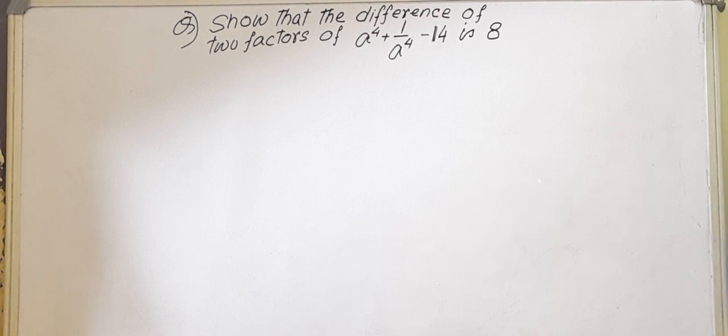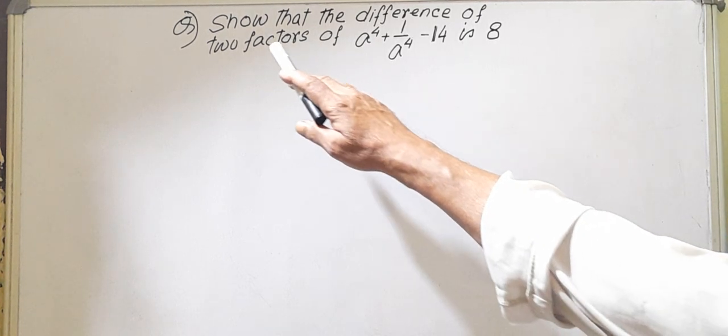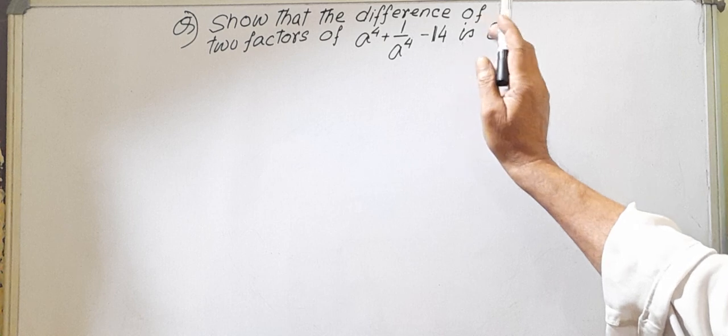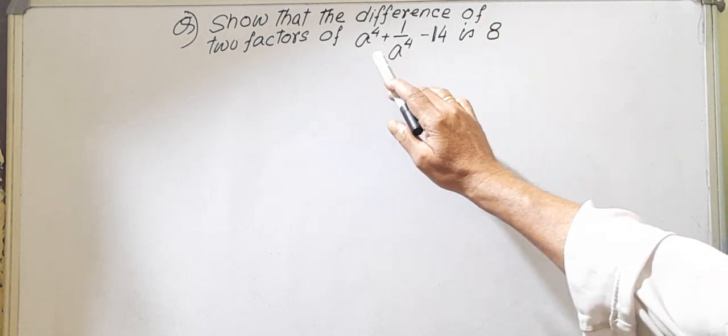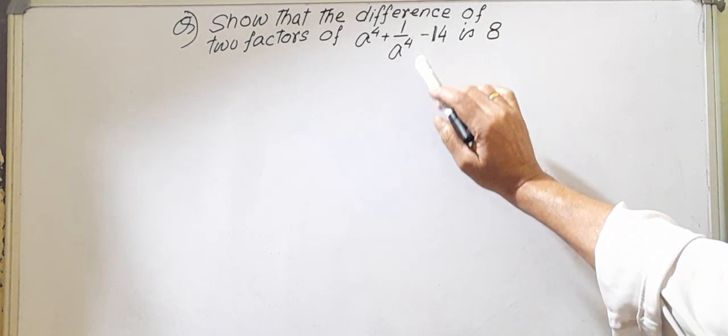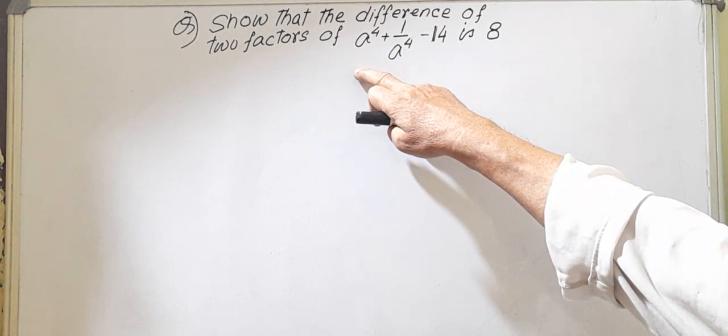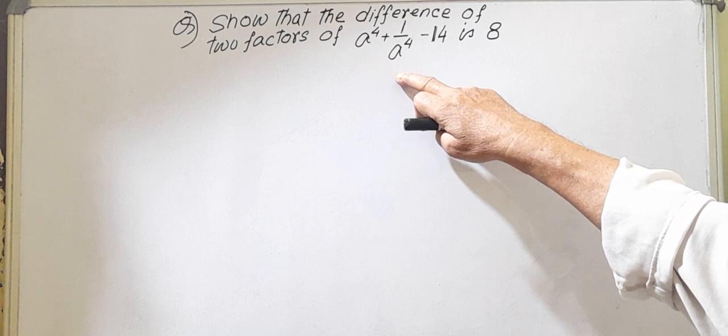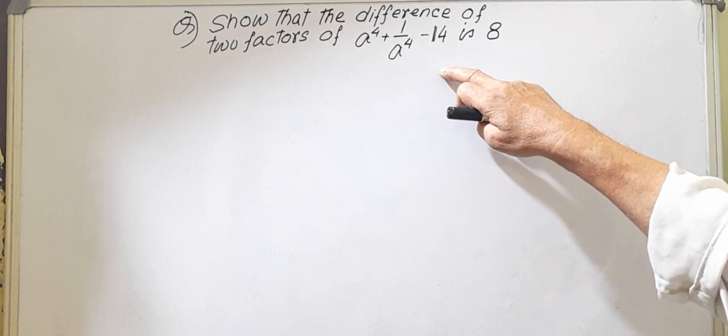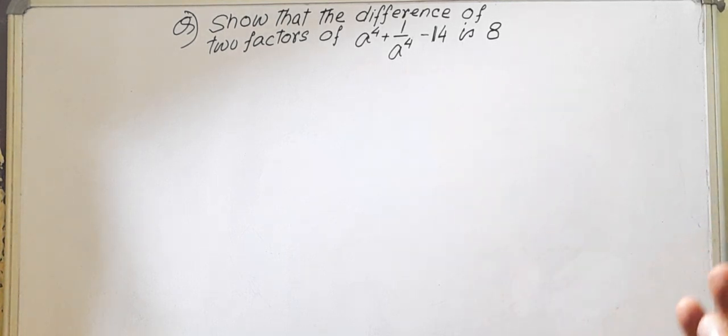Today I will give a problem of A plus B whole square curve. The question is to show that the difference of two factors of A to the power 4 plus 1 by A to the power 4 minus 14 is 8. These things, A to the power 4 plus 1 by A to the power 4 minus 14, are to be distributed into two different factors.